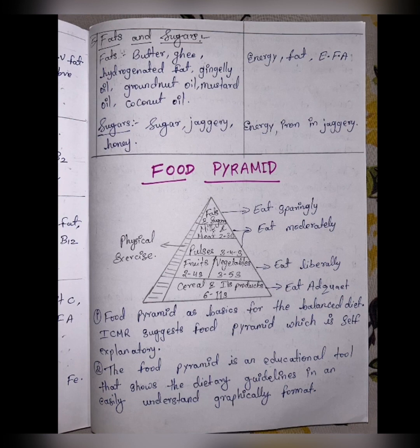Food pyramid: the food pyramid is made by humans to understand dietary guidelines in an easily understandable graphical format. Fats and sugars are at the top — eat sparingly, meaning very less. Milk and meat products — eat moderately, not more or less. Pulses, fruits, and vegetables — eat liberally, meaning you can have more. Cereals and its products — eat adequately to meet your need. Physical exercise is also important to stay fit along with better nutrition.